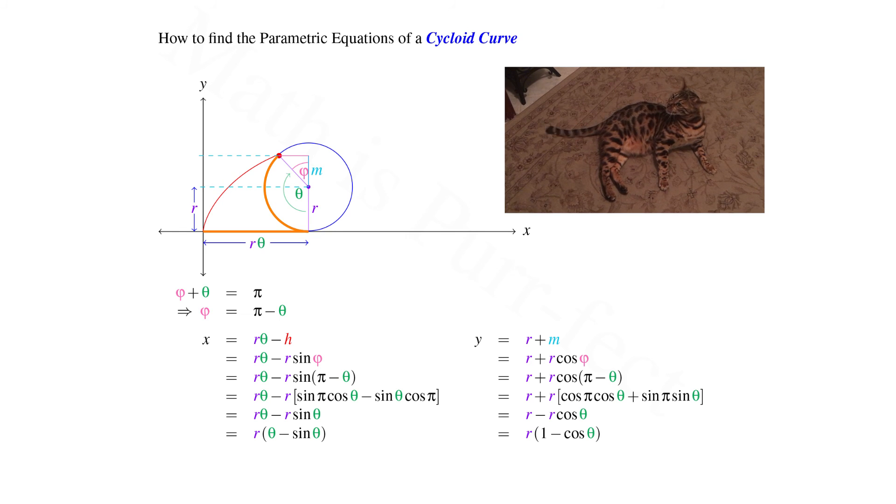Factoring out the r, we have that y equals r times the quantity, 1 minus cosine theta.